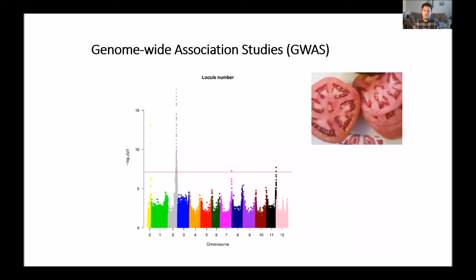The other thing I do is called genome-wide association studies. It's a statistical method to see correlations between genomic regions and traits of interest. One trait that is interesting for us is locule number, which is correlated with tomato weight. If you cut a tomato and look inside, the more chambers it has, chances are that it's a bigger tomato. These chambers are called locules, and I did some analyses and discovered new correlations for some genes on chromosome 7. These kinds of discoveries will help us improve tomato yield.